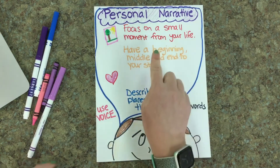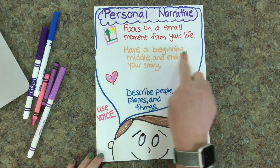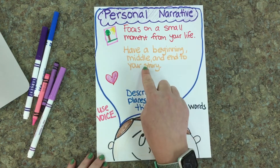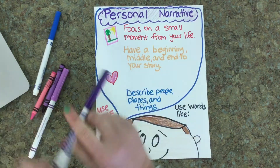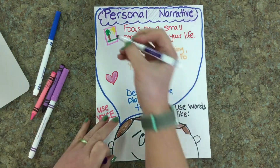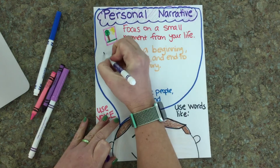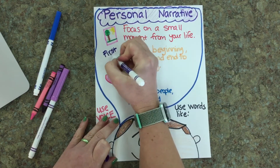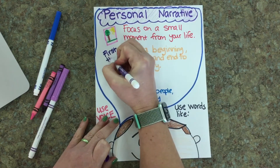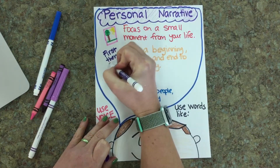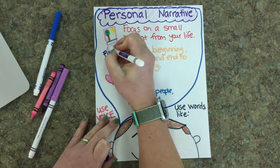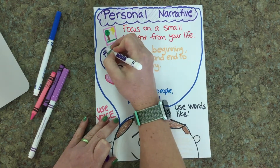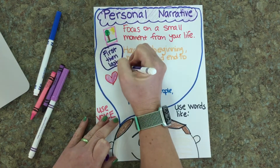A personal narrative also has to have a beginning, a middle, and an end to your story. You'll use words like first, then, and last. Use those transition words as you tell your story.